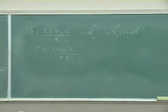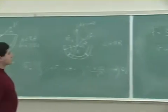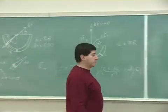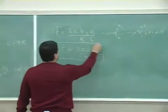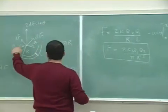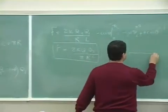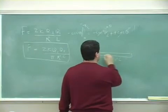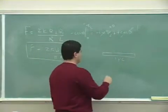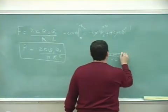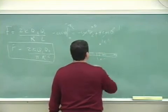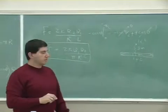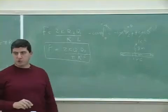Now we could put in some numbers and see if the answer we're getting makes sense. Remember last week we did the same rod with the rod flat — it had a charge of 1 microcoulomb, a length of 12 meters, and then we had another charge of 1 microcoulomb at a distance of 8 meters. When we found the force, what was its magnitude?